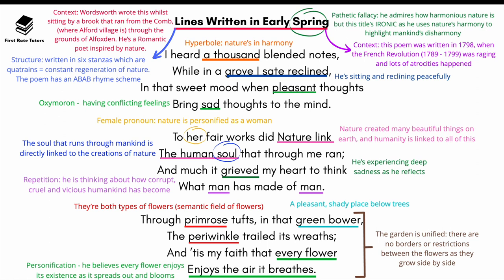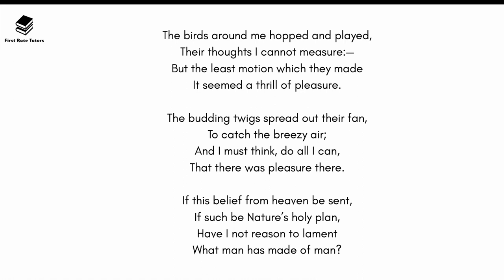The third stanza is significant because the garden is unified — there are no borders or restrictions between the flowers as they grow side by side. This contrasts with humanity: on world maps we draw lines, dividing one country from the next, dividing ourselves by gender, race, class, and origin. Humanity's fragmentation and disharmony contrasts with how united and unified nature is.